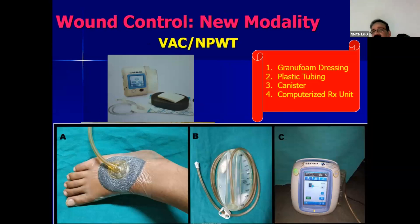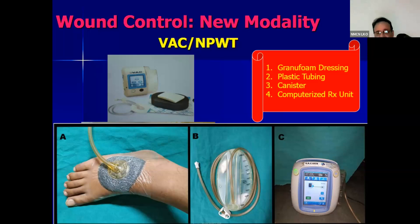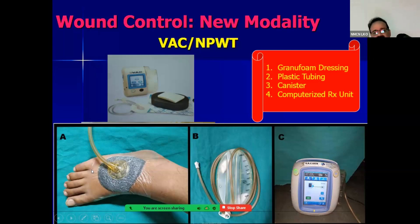Negative pressure wound therapy or VAC is now not a new modality — it has become a standard of care for chronic ulcer healing, particularly diabetic foot ulcers. In this technique, foam is put over the wound and through a tubing it is connected to a computerized therapy unit with a canister. Whatever discharge comes out is aspirated into the canister, and you can adjust the negative pressure using this computerized unit.